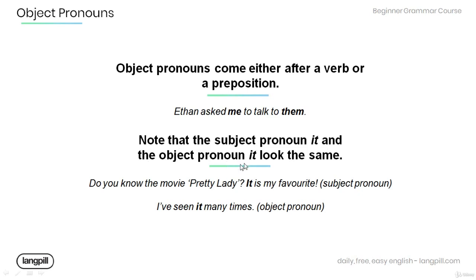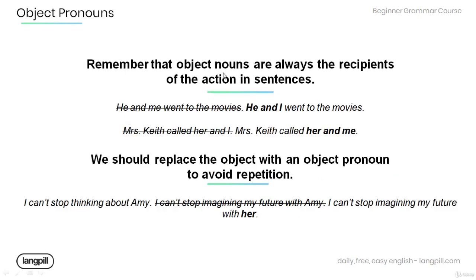Also note that the subject pronoun 'it' and the object pronoun 'it' look the same. For example: 'Do you know the movie Pretty Lady? It is my favorite.' Here, 'it' is a subject pronoun because it is used as the subject of the sentence. In the sentence 'I've seen it many times,' 'it' is an object pronoun because it is used as the object of the sentence after a verb.